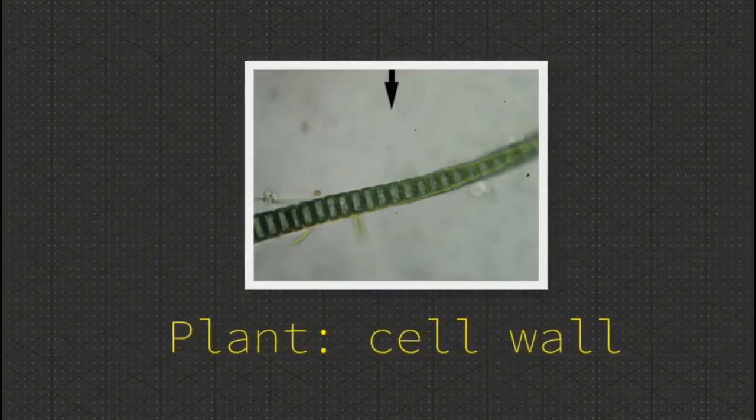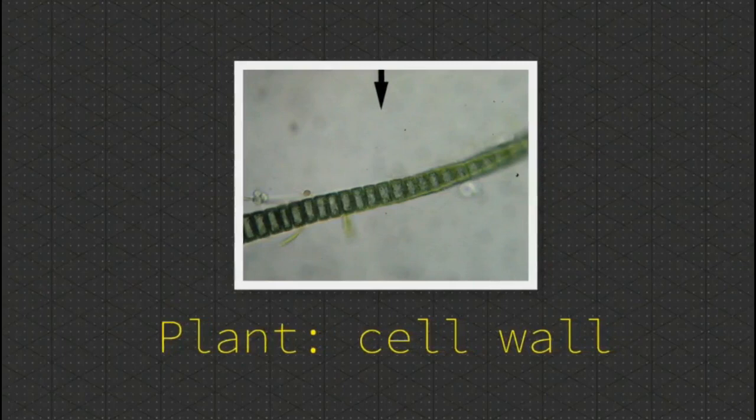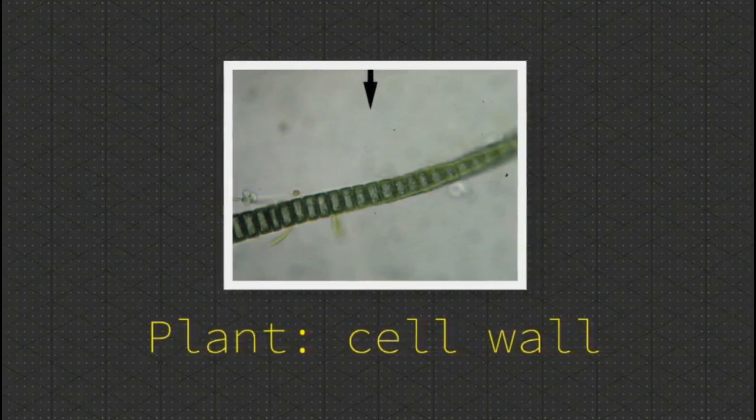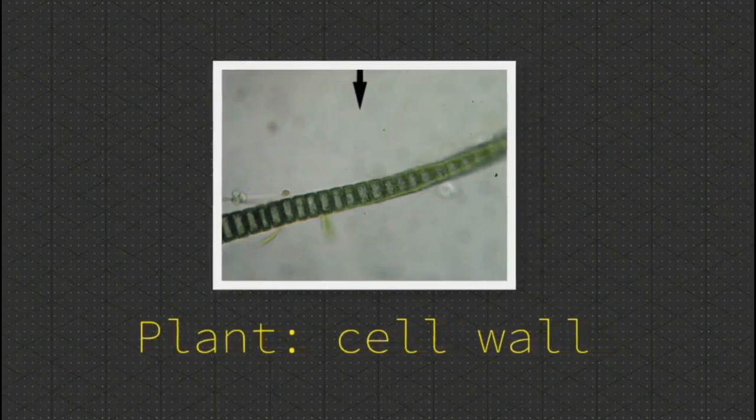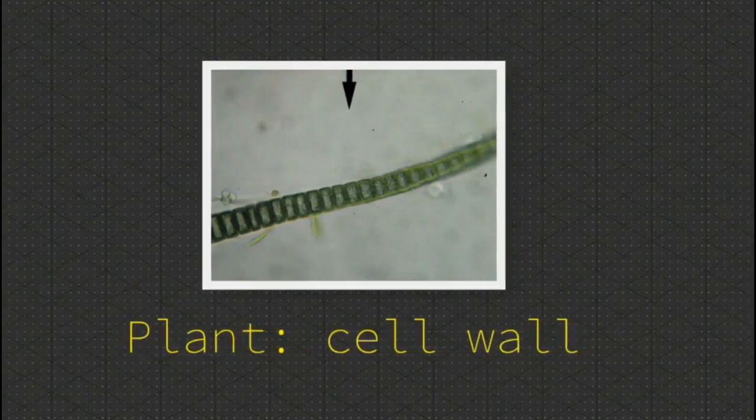Plant cells are supported by a hard outer surface. It often makes the lines on the outside of a plant cell straight. This is called a cell wall.